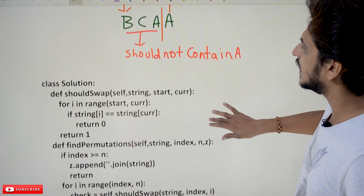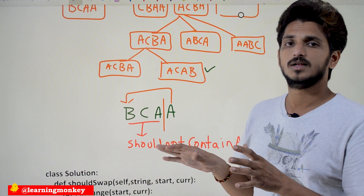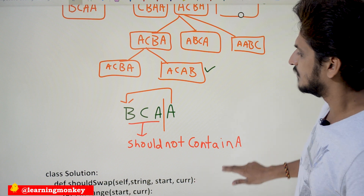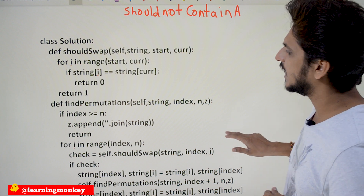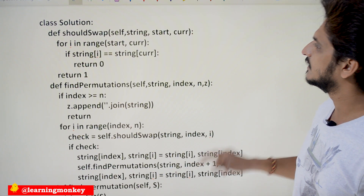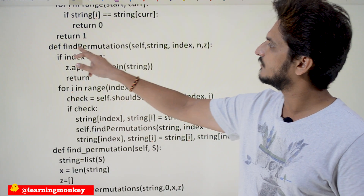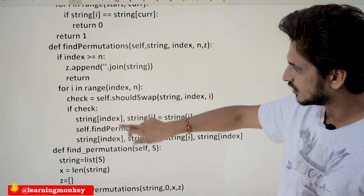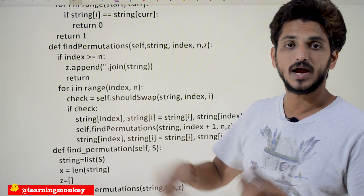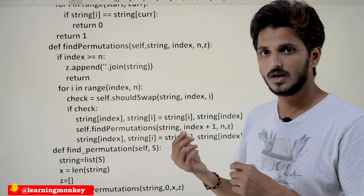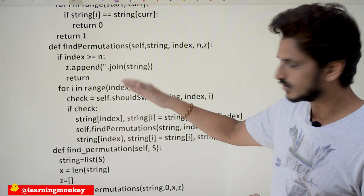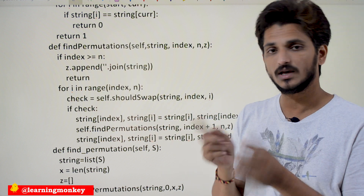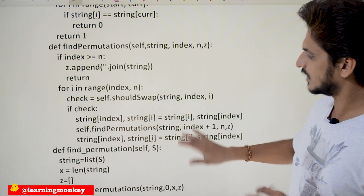Now take a look at the coding part. Based on this intuition, try to solve it on your own. The code is available on our website learningmonkey.in — you can copy and paste it and execute the code, but our suggestion is to try it on your own. Coming to the logical part, in the function def findPermutations, we are going to use a loop: for i in range(index, n). You are going to call the same function repeatedly — if index is equal to 0, N times; if index is equal to 1, N-1 times; if index is equal to 2, N-3 times. Before calling the function, check the possibility whether you need to swap this character or not.